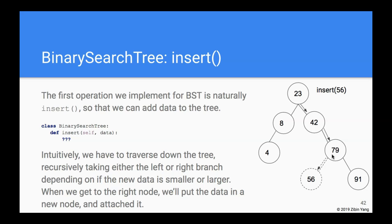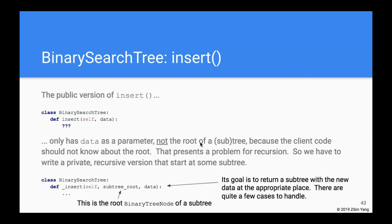The public version of insert takes only data as a parameter — that's intentional because we don't want the client to know about the root. But that creates a problem: how do we do recursion and walk down the tree to find the right place to insert? We really need the insert operation to have a node parameter so we can recursively walk down, which is why we write a private recursive version.